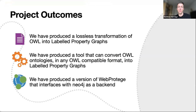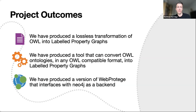We were therefore interested in exploring the intersection of labeled property graphs, OWL, and ontology editing. While we initially worked with Neo4j, I want to mention that this work is not specific to Neo4j — our specifications use labeled property graphs as a language, so it's generic enough to work with any graph database that supports LPGs and related standards. Our achievements include: a lossless transformation of OWL into labeled property graph syntax; a bidirectional transformation so we can convert from an OWL ontology into an LPG and back into exactly the same ontology; a tool that converts OWL-compatible syntaxes such as Turtle, RDF/XML, or functional syntax into labeled property graphs; and a version of Web Protégé that interfaces with Neo4j as a backend.